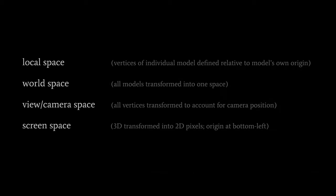Very broadly, what we do in 3D rendering is we take a bunch of individual models defined in terms of their own local coordinate systems. We transform those into a common world space with different models positioned and rotated as we see fit. Then we account for the position of the camera by translating all coordinates into view space or camera space. Lastly, we transform from this 3D view space into a 2D screen space, a two-dimensional image.